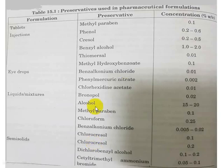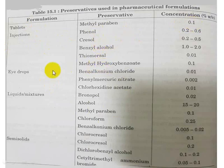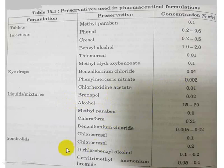Here are a few representative examples of preservatives in different formulations. In case of injections, we use methylparaben at a concentration of 0.1%, and phenol, benzyl alcohol, and so on. For eye drops, we can use benzalkonium chloride, a well-known preservative for eye drops, at a concentration of 0.01%. In liquid mixtures, we can use alcohol, bronopol, methylparaben, and chloroform. In semisolid formulations, we can use chlorocresol, which is common for both liquid as well as semisolid pharmaceutical products.